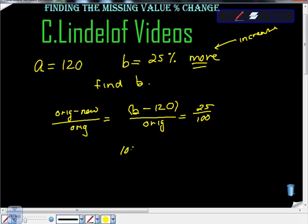You get 100 times this, which is 100B minus 12,000. Remember that the original was 120. So you get 120 times 25. 120 times 25 is 3,000.